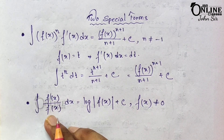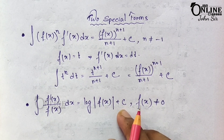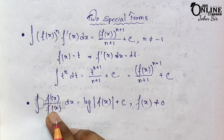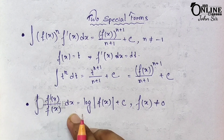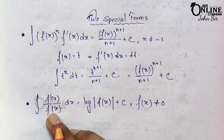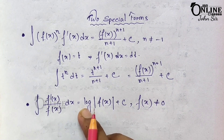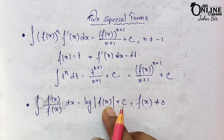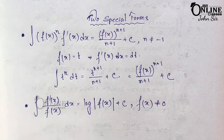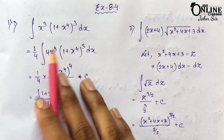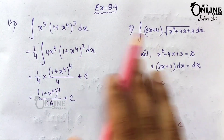The second formula is: integration of f'(x)/f(x) dx equals log|f(x)| + C. Here also, let f(x) = t, then f'(x)dx = dt, so the integral becomes ∫(1/t)dt = log t = log|f(x)| + C.